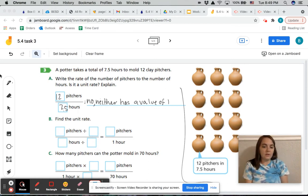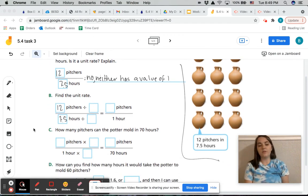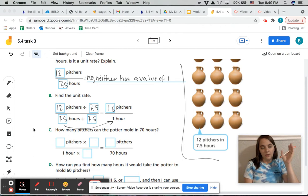So now what we're going to do is we need to find the unit rate. And in order to find the unit rate, we're going to write our ratio. And then we're going to use equivalent fractions or equivalent ratios to find what the unit rate is. So what do we have to divide 7 1/2 by to get 1? 7 1/2. And what you do to the bottom, you have to do to the top too. So now we're left with 12 divided by 7.5, which is 1.6. So this means that the unit rate is the potter makes 1.6 pitchers per hour.